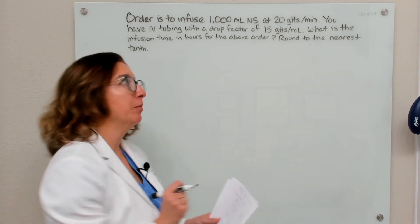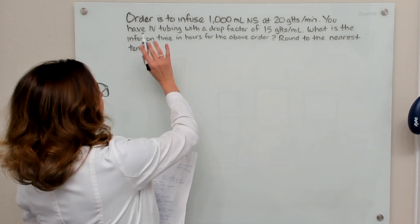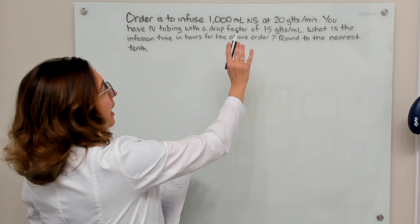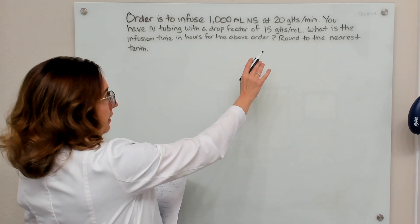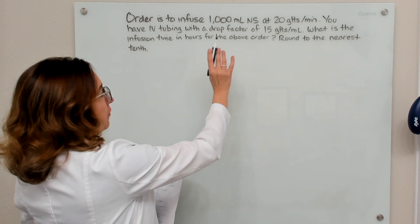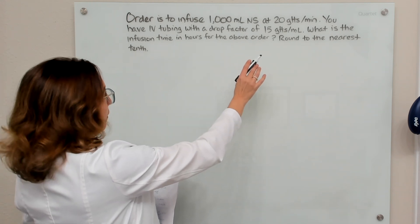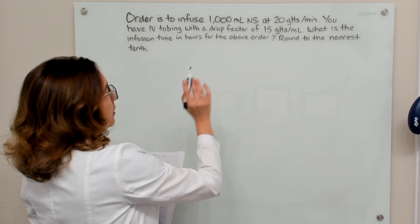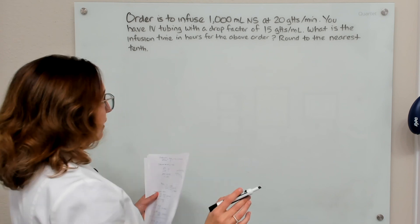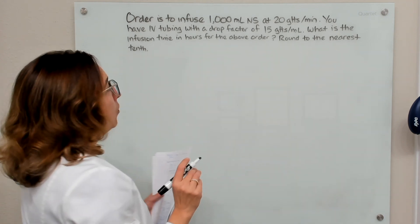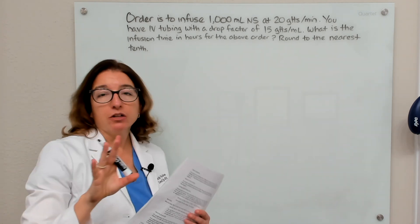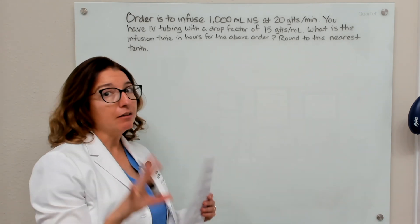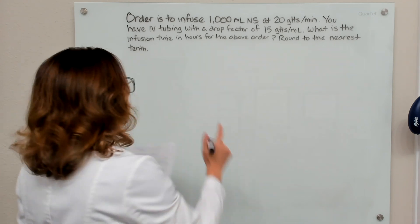Let's work through our next example problem. We have an order to infuse 1000 milliliters of normal saline at 20 drops per minute, with IV tubing having a drop factor of 15 drops per ml. We want to know the infusion time in hours, rounded to the nearest tenth. We'll solve this with dimensional analysis first, then ratio and proportion — dimensional analysis is definitely more efficient here.